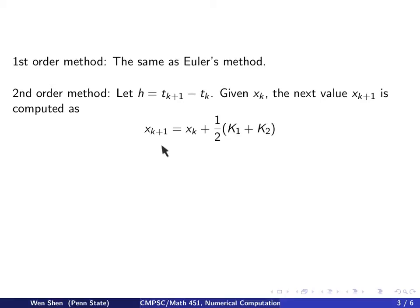The next value, xk plus 1, is computed as xk plus one half times the sum of two constants, capital K1 and capital K2. And they are computed as follows.